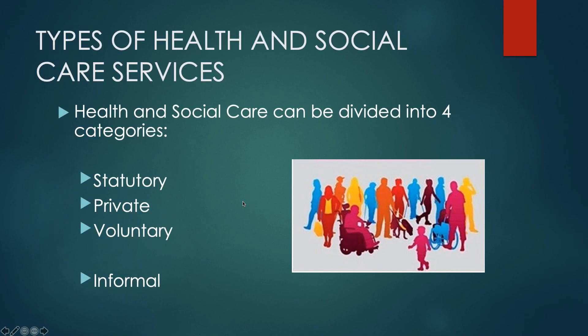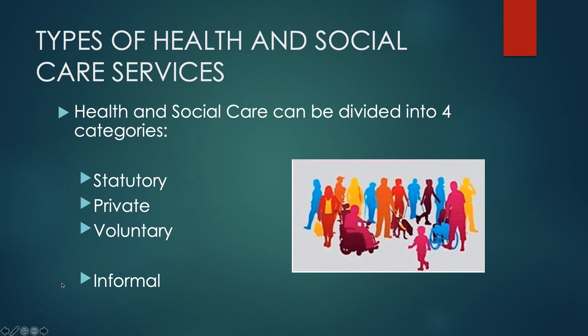There are two types of health and social care delivery: formal and informal. The formal is split into three — statutory delivery, private delivery, and voluntary delivery — and then we have informal delivery of health and social care. So health and social care is divided into four categories overall.